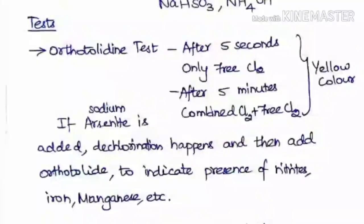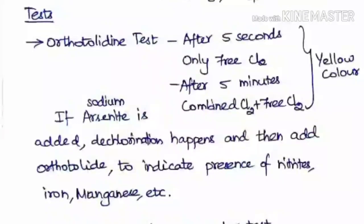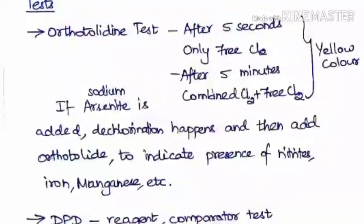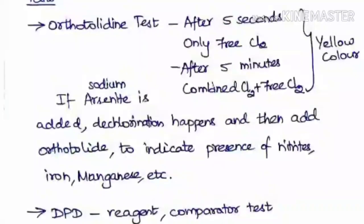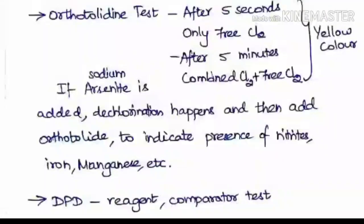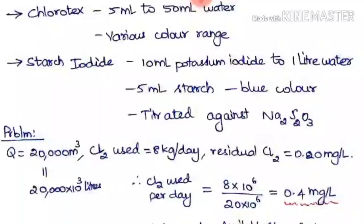The next is the DPD test. The DPD reagent is added to the water and similarly a red color blooms, which is compared with the standard solution to get the amount of chlorine present in the water. The next is the Chlorotex test. Chlorotex is a reagent used with water where nearly 5 mL of Chlorotex is added to 50 mL of water.